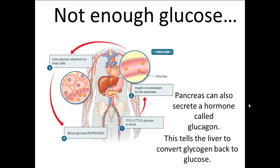If blood sugar is too low — say you've had a period of fasting — then the pancreas stops producing insulin. This means that less glucose is absorbed by the cells and therefore blood glucose increases. The pancreas also produces another hormone called glucagon, which tells the liver to convert glycogen back into glucose.